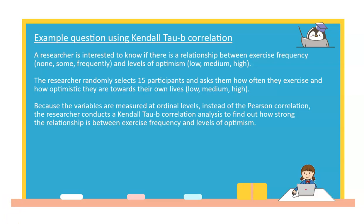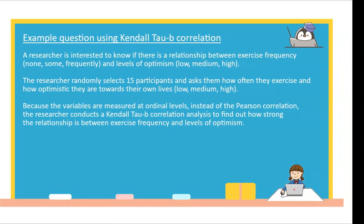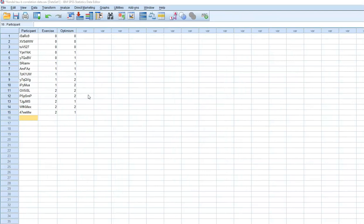Now let's see how Kendall Tau-B correlation can be conducted in SPSS over a data set related to this research question. Our data set consists of 15 participants, which are measured on two variables: how often they exercise and how optimistic they are towards their lives.